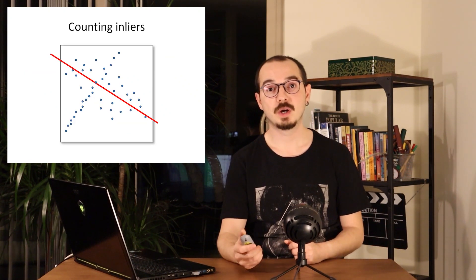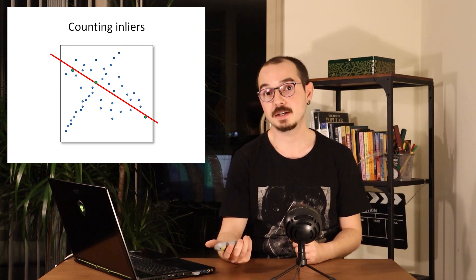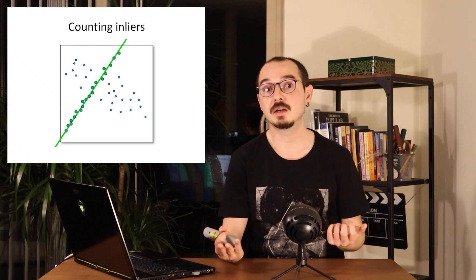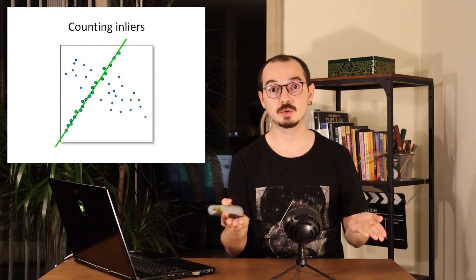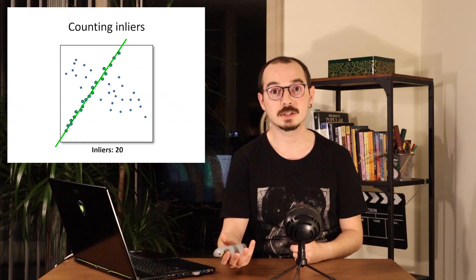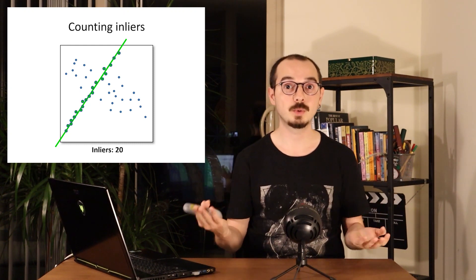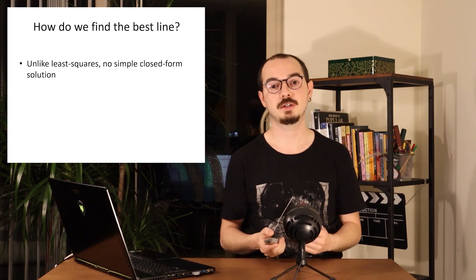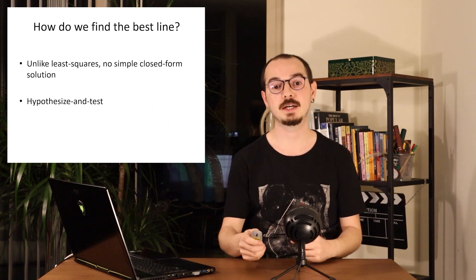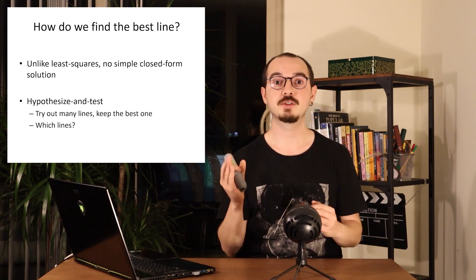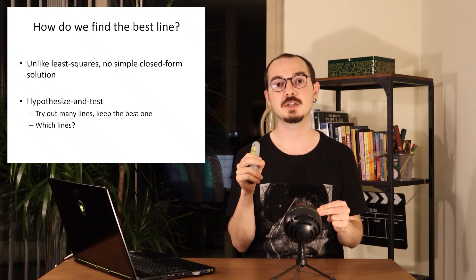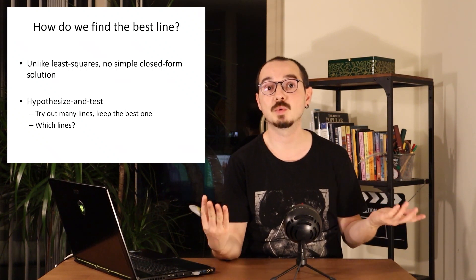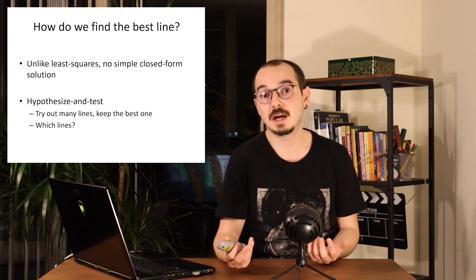In our line fitting example, when we fit a line through only a few points, only three points agree with it, giving an inlier count of three. But when we fit a line through the right points, the inlier count rises to 20, and we pick the line with the most inliers. This is not a closed-form mathematical solution — it is hypothesizing and testing over and over again. Instead of mathematical optimization, we simply fit many lines defined by just two points and pick the best one.